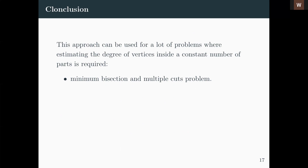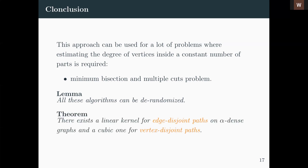This approach can be used for many problems where estimating vertex degrees inside a constant number of parts is required — cut problems like minimum bisection, d-way cut, multi-way cut, and multi-cut — giving either sub-exponential algorithms or linear kernels. All these algorithms can be de-randomized. We also showed that some prior PTASes can be generalized, which to our knowledge is new. Finally, let me remind you of the other result: a linear kernel for Edge Disjoint Paths and a cubic kernel for Vertex Disjoint Paths on dense graphs — proved using a completely different, more structural approach. Thank you.